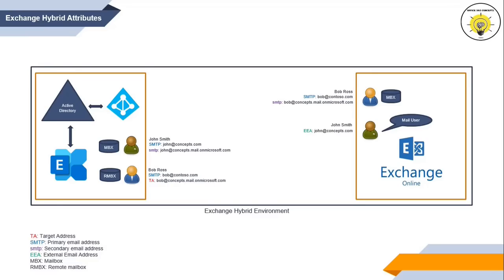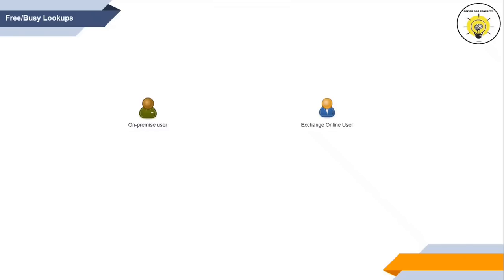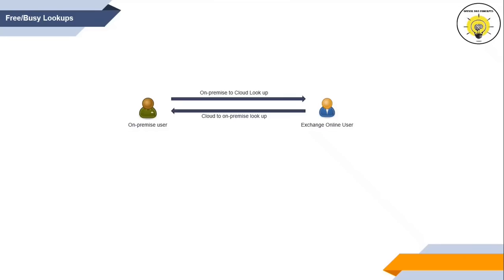This concept was discussed in a previous video about HCW in detail, so you can go through that video if you want to know the entire HCW process. The third concept is free busy lookups or free busy directions in Exchange Hybrid. In Exchange Hybrid deployment, there are two types of free busy lookups: when an on-premise user wants to check availability of a cloud user, this is called an on-premise to cloud lookup; and when an Office 365 user wants to check availability of an on-premise user, this is called a cloud to on-premise lookup.